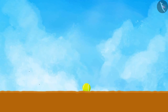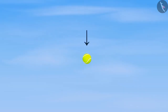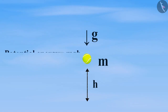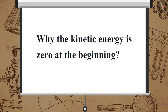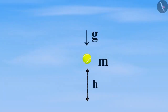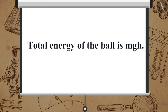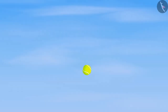Now let us perform a simple activity to understand the law of conservation of energy. Suppose a ball of mass M undergoes free fall from a height H. At the start of the fall, the potential energy of the ball is equal to MgH and the kinetic energy is equal to zero. Can you answer why the kinetic energy is zero at the beginning? It is because the ball has no velocity in the beginning. So the total energy of the ball is MgH.